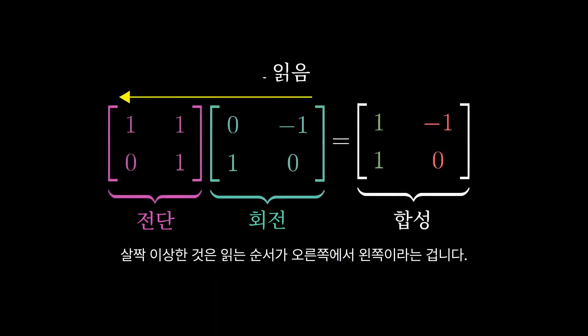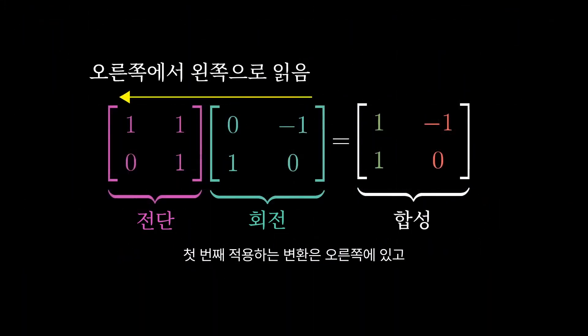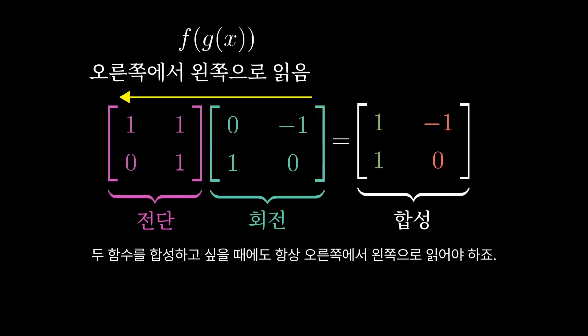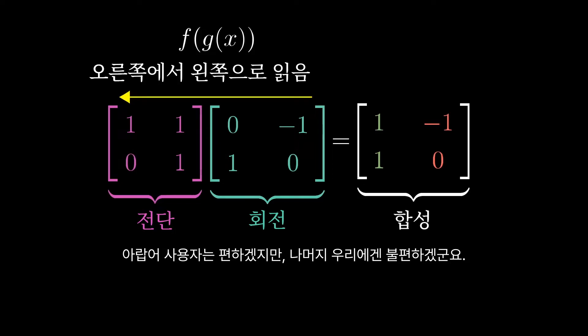One thing that's kind of weird here is that this has us reading from right to left. You first apply the transformation represented by the matrix on the right, then you apply the transformation represented by the matrix on the left. This stems from function notation, since we write functions on the left of variables, so every time you compose two functions you always have to read it right to left. Good news for the Hebrew readers, bad news for the rest of us.